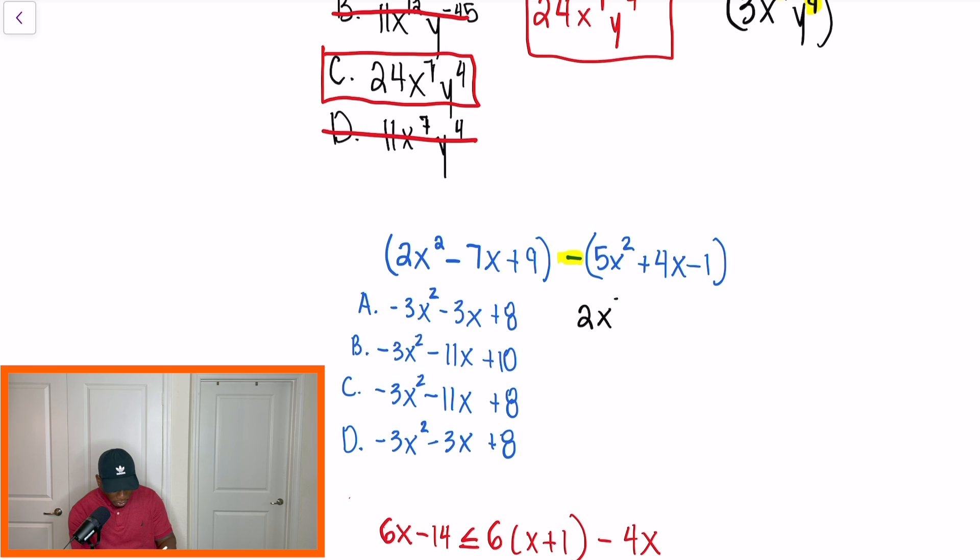So I'm going to rewrite this as 2X squared minus 7X plus 9. And now when I focus on the second set of parentheses, the numbers inside, we're going to flip the signs now because of the negative on the outside. So now I have minus 5X to the second power minus 4X and plus 1. So at this step now, we're just combining like terms. 2 minus 5 is going to give me negative 3. So we have negative 3X squared after we combine our first two terms.